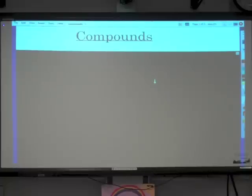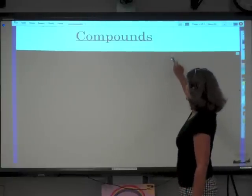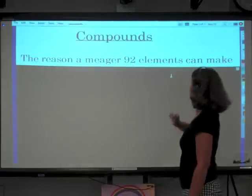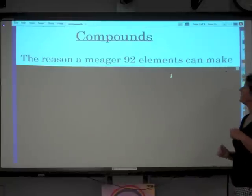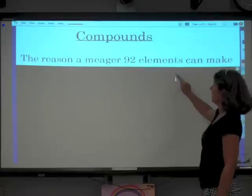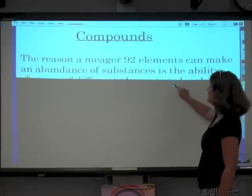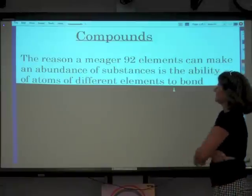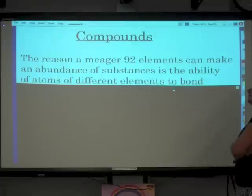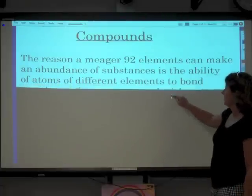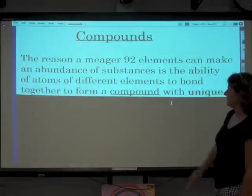And so the question is this. If we only have 92 different kinds of building blocks to make up substances, how can we have the millions and millions of different substances that we find here in our environment? Well, the reason a meager 92 elements can make an abundance of substances is the ability of atoms of different elements to bond together to form a compound.